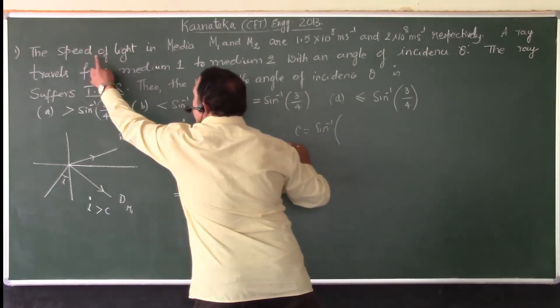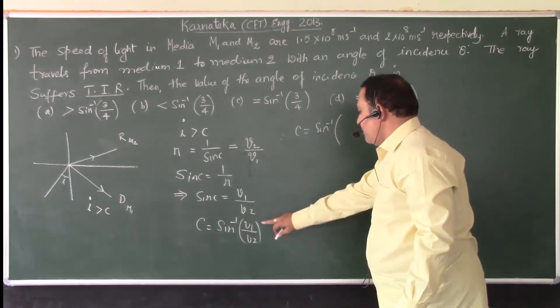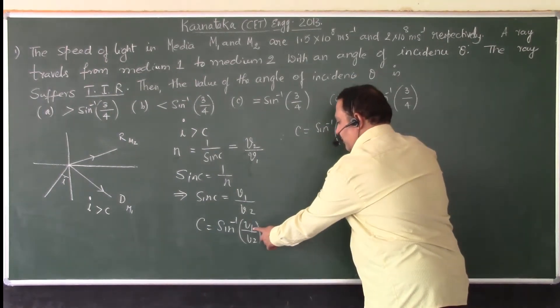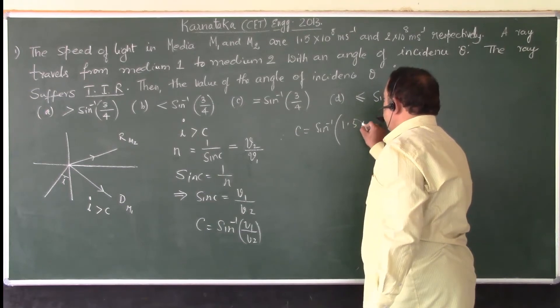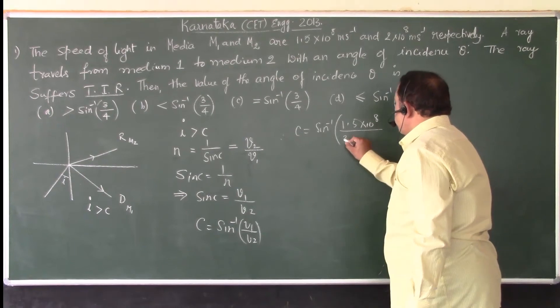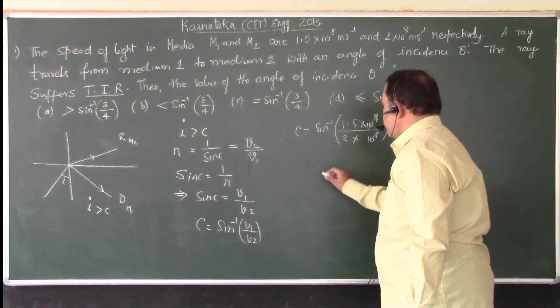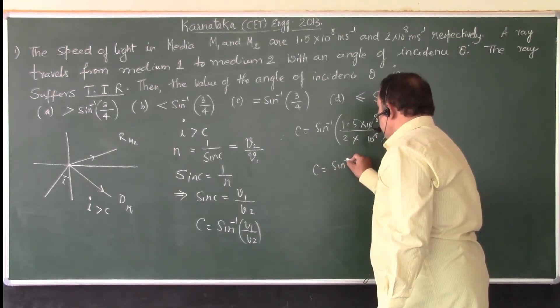The speed of light in medium 1, that is V1 is 1.5 into 10 power 8 meters per second. And in medium 2, it is 2 into 10 power 8 meters per second. Cancelling these, we get C equals sin inverse of, take off this decimal to one place right side.